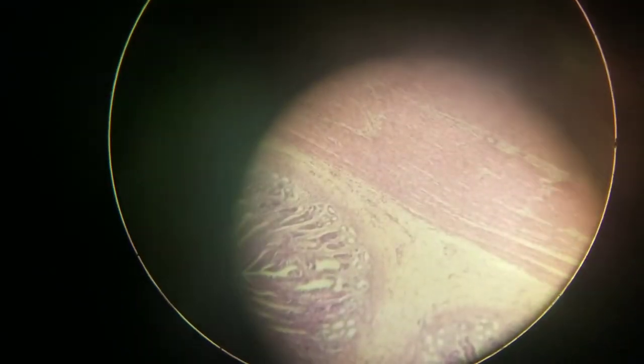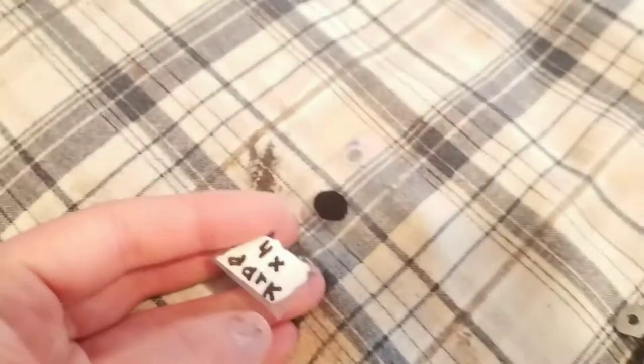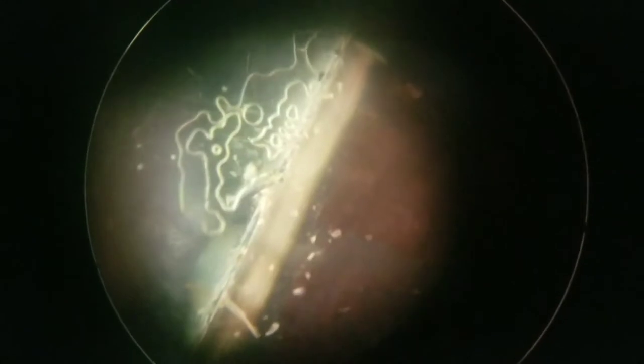Here it is at 64x, no polarization or dark field. Now let's just add the dark field filter called 4x dark. Edge of the specimen.